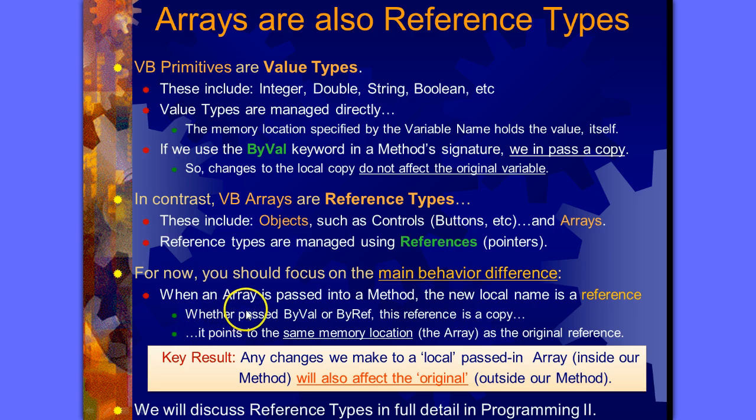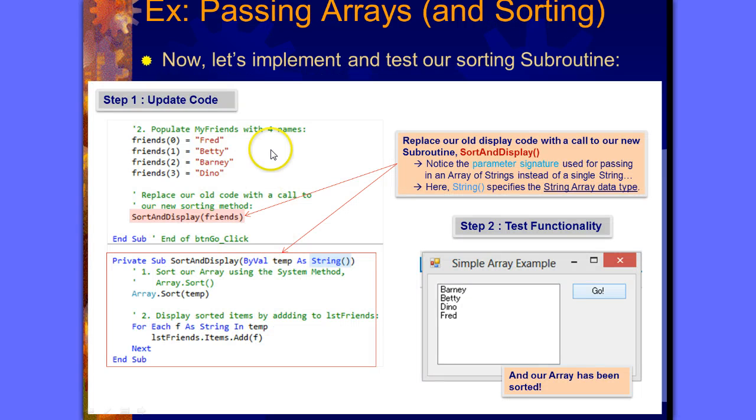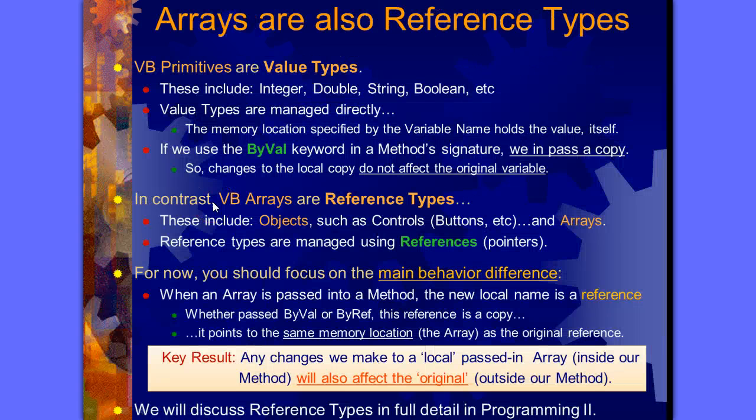When an array is passed into a method, we did this before, right? We're passing in an array here because we use these brackets. We pass an array into our sort and display method. When an array is passed into a method, the new local name is a reference. Whether it's passed by value or by ref, this reference is a copy that points to the same memory location as the original reference.